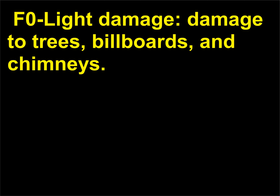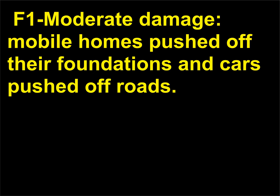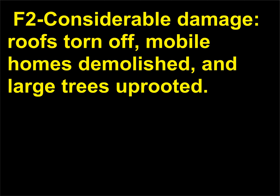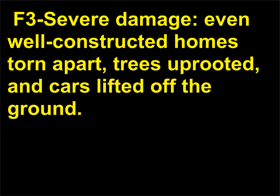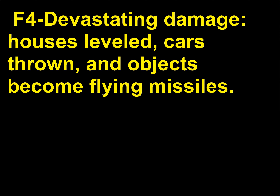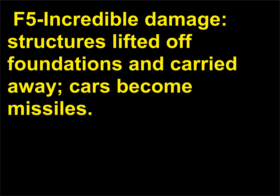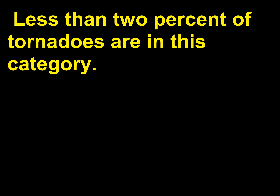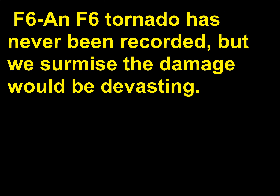F0: light damage — damage to trees, billboards, and chimneys. F1: moderate damage — mobile homes pushed off their foundations and cars pushed off roads. F2: considerable damage — roofs torn off, mobile homes demolished, and large trees uprooted. F3: severe damage — even well-constructed homes torn apart, trees uprooted, and cars lifted off the ground. F4: devastating damage — houses leveled, cars thrown, and objects become flying missiles. F5: incredible damage — structures lifted off foundations and carried away, cars become missiles; less than 2% of tornadoes are in this category. F6 has never been recorded, but the damage would be devastating.